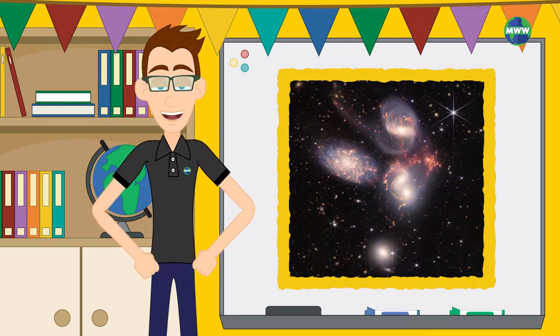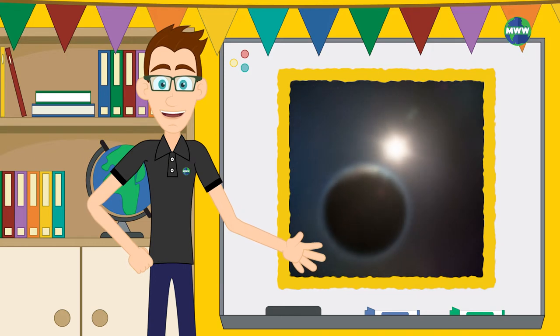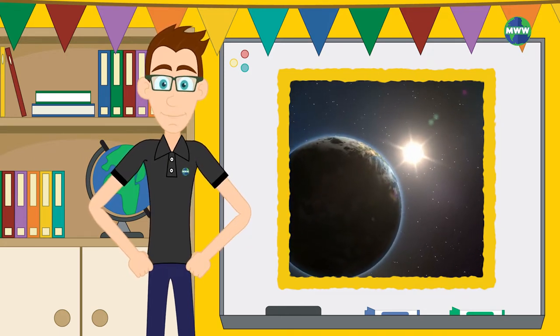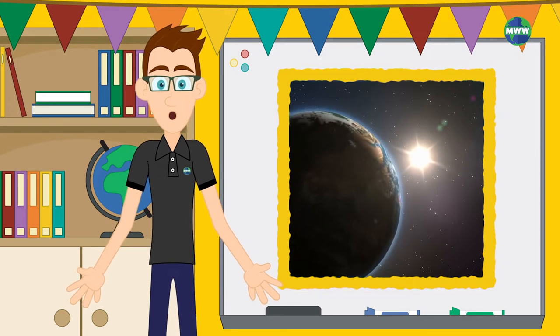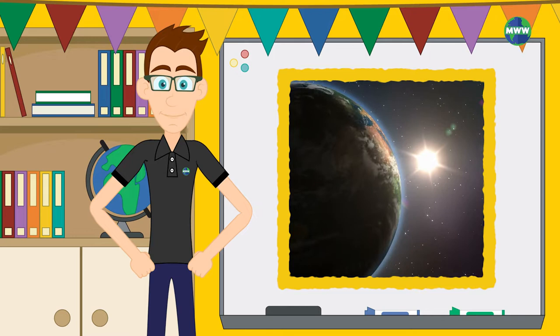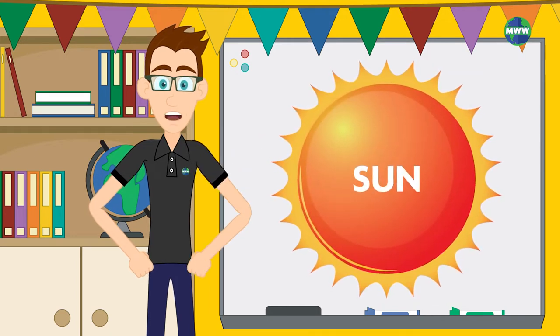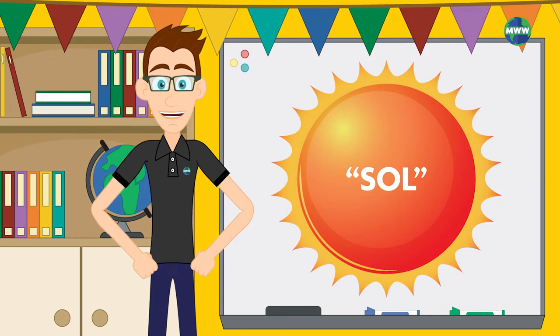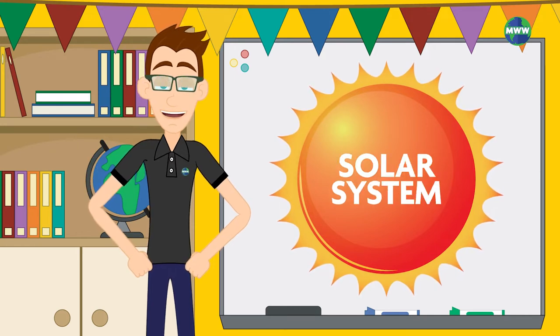Our universe holds many planetary systems. The one we live in is called the solar system. We call it the solar system because we use the word solar to describe things related to our star, the only star in our solar system called the sun. The sun gets its name from the Latin word solis, and if you know the word for sun in Spanish, sol, then it all makes sense why we get the name solar system.